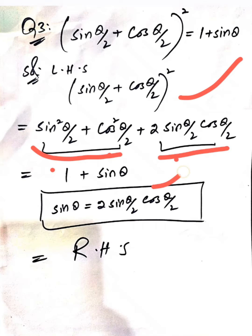We apply the formula 2 sin(θ/2) cos(θ/2) = sin θ, and we get the right hand side result: 1 + sin θ. Dear student, I hope you will learn these three questions. In the next lecture we will also discuss some more important questions.